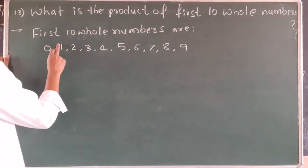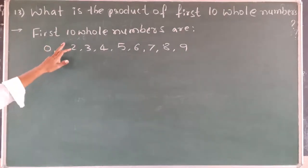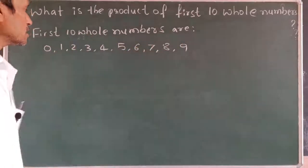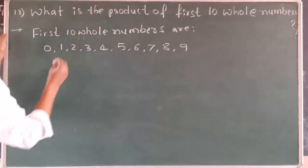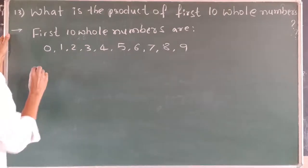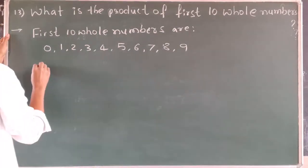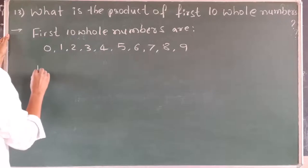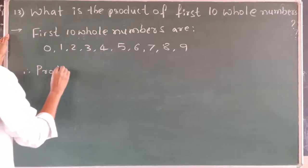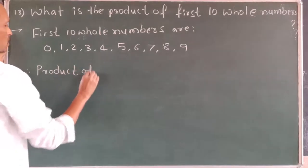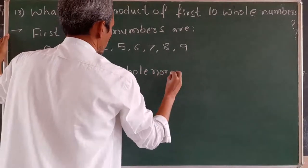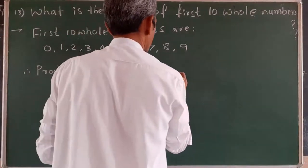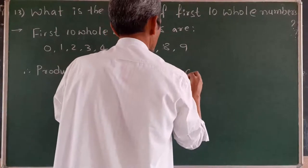Now we will multiply these. Zero into 1 is 0. Zero into anything is 0. If there is a 0 in between the product of some numbers, then the whole product will become 0. Therefore, the product of the first 10 whole numbers is equal to 0. This is the answer.